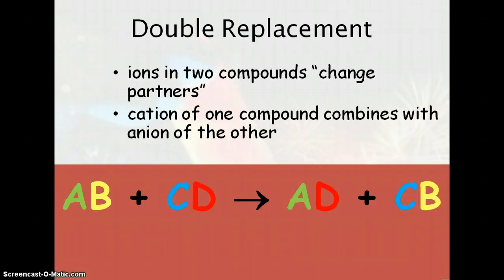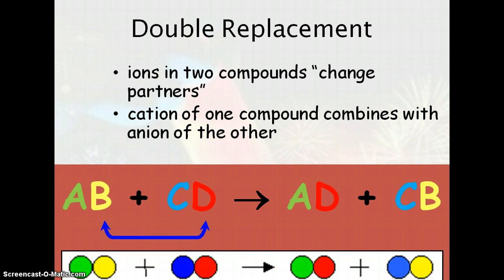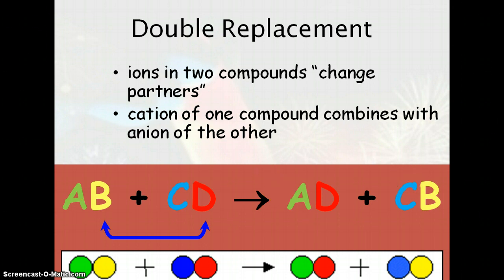Double replacement is when you have two ions in two compounds, and they're going to change partners. The cation or positive one of one compound combines with the anion of the other—the positives switch places. In this case, AB and CD initially, then B and D swap places: A is now with D, and C is now with B—a swapping of partners.